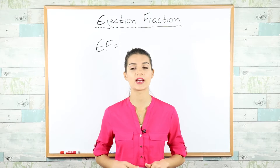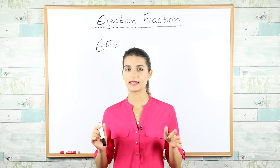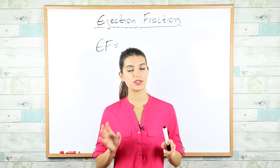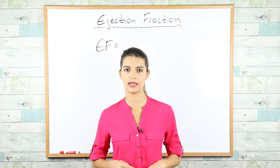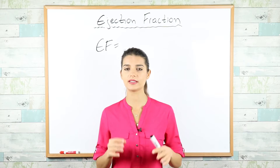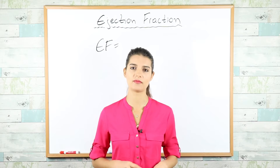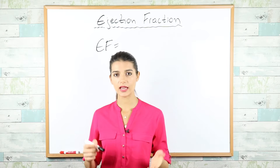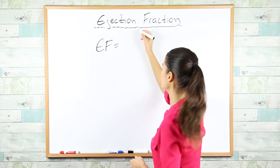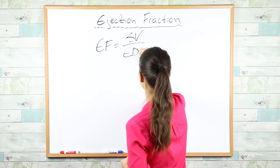Let me say a few words about the two types of heart failure before we jump into their management. Ejection fraction is the amount — or fraction — of blood that's pushed out of the left ventricle every time it contracts. It's measured from the left ventricle because it's the main pumping chamber. The formula is: ejection fraction equals stroke volume divided by end-diastolic volume.